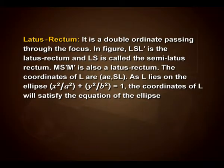Latus rectum: it is a double ordinate passing through the focus. In the figure, LS L' is the latus rectum and LS is called the semi-latus rectum. M S' M' is also a latus rectum.